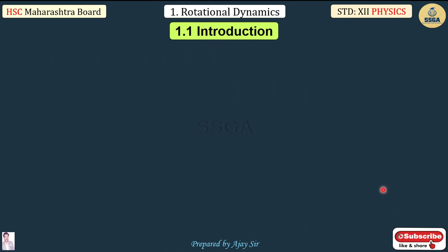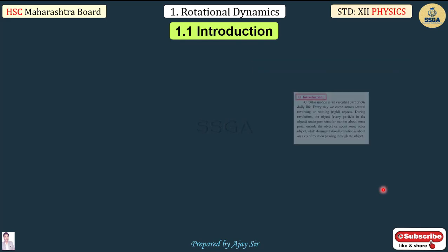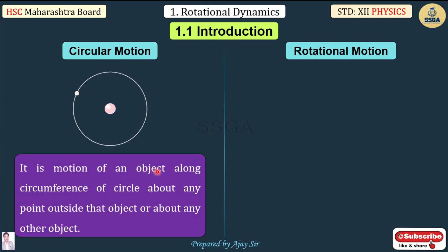In the introduction, we classify circular motion and rotational motion. Circular motion is the motion of an object along the circumference of a circle about any point outside the object, or about any other object. The axis or point of rotation is outside the moving object.